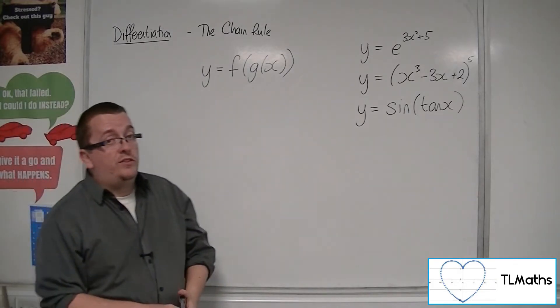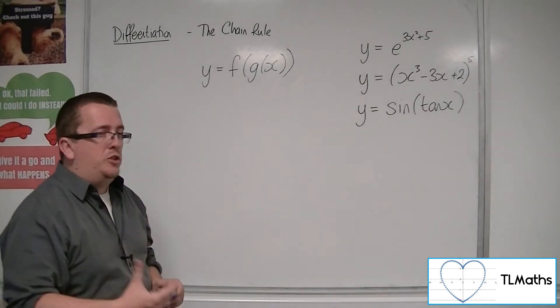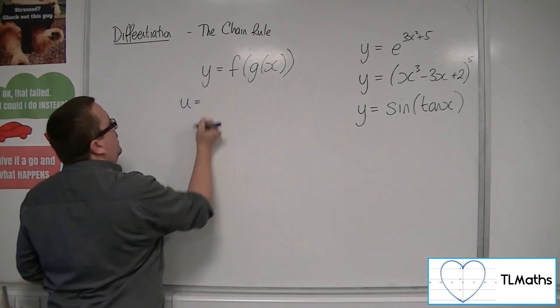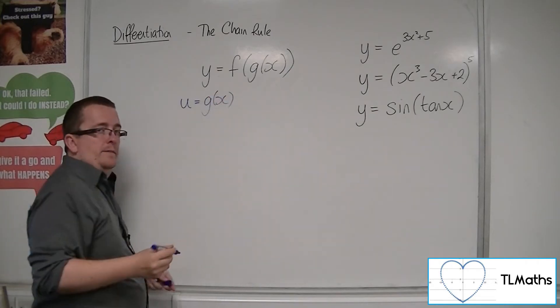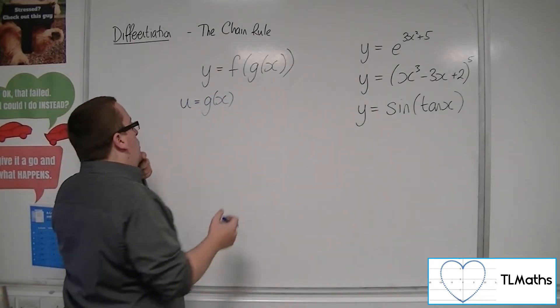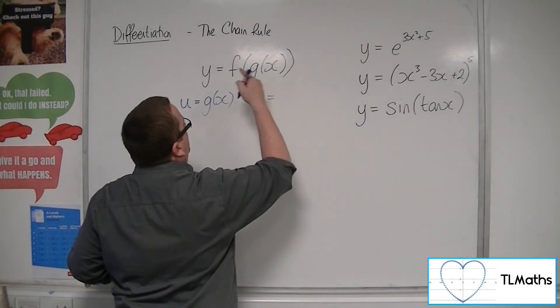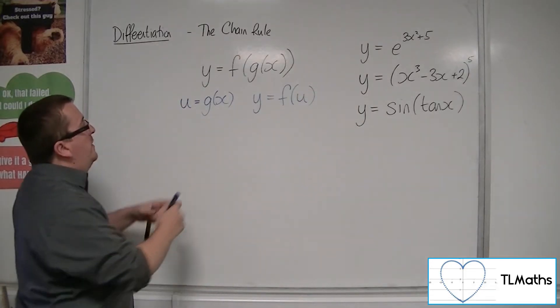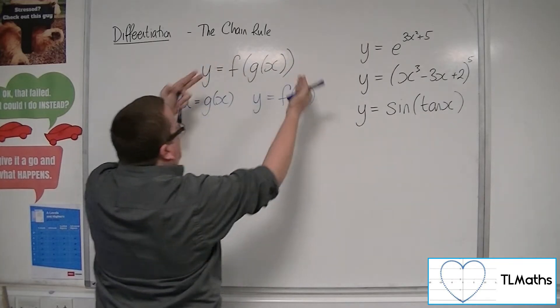So how do we do it? What we do is we make a substitution. We allow u to be the g of x, the function within. And so what that is as a result is that we have y is equal to f of u. So if we've allowed the g of x inside to be u, I now have f of u.